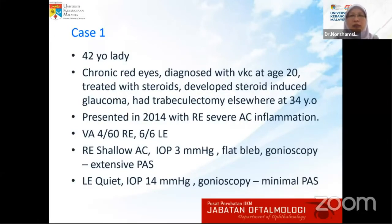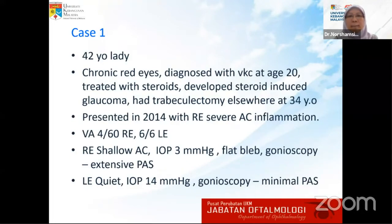My first case is a middle-aged lady with chronic red eyes, diagnosed when she was 20 years old with vernal keratoconjunctivitis. She was treated with steroids but developed steroid-induced glaucoma and had trabeculectomy done elsewhere at 34 years old. She presented a few years ago with red eye, cervical inflammation, and severely low IOP, seeing 4/60 in that eye. Gonioscopy showed extensive peripheral anterior synechiae and the trabeculectomy bleb was flat.